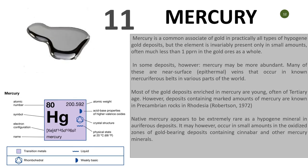Number eleven is mercury. Mercury has an atomic number of 80 and is a common associate of gold in practically all types of hypogene gold deposits. It is present in small amounts in different deposits, though in some deposits mercury may be more abundant. Many of these are epithermal, near-surface vein types. Most gold deposits rich in mercury are young, often Tertiary age, and have deposited mercury in amounts actually unknown in the Precambrian rocks of Rhodesia, according to a 1972 study. Mercury is another element you need to look at.